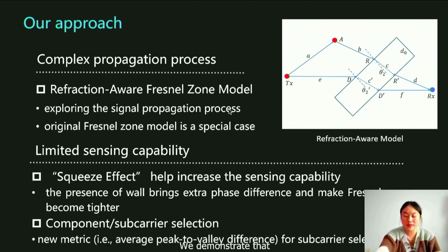We demonstrated that the spatial resolution of Wi-Fi CSI can be improved due to the different permittivity of walls and air, which leads to an actual phase difference and makes the Fresnel zones become tighter. Moreover, we propose a metric to select such areas.